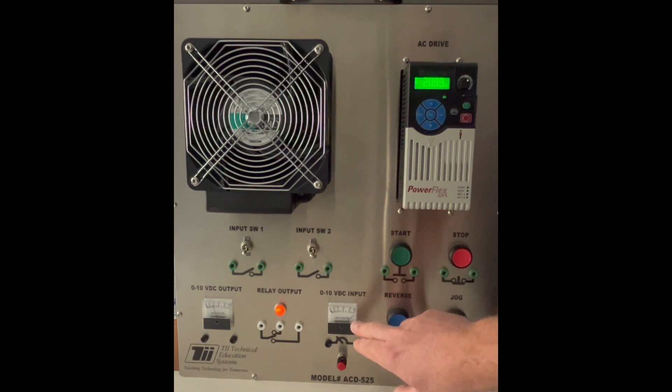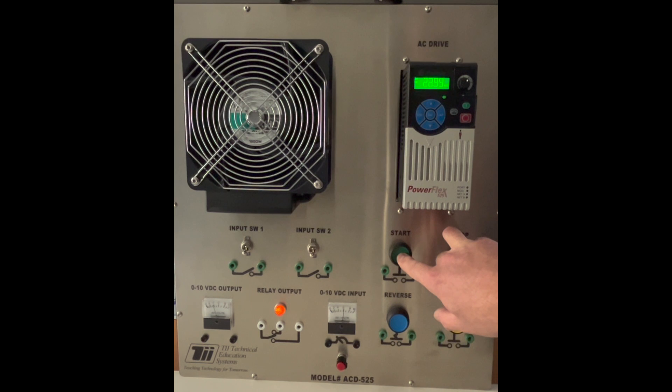I'm still using an external potentiometer to adjust the speed. So if I turn this down, this will control what frequency it goes up to. Activate the Start button, turns it on, turns it off when I let it go.